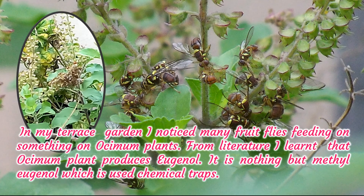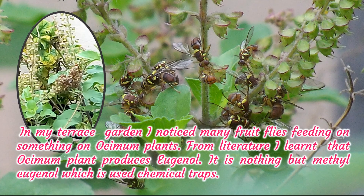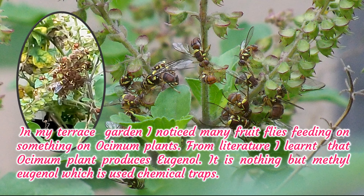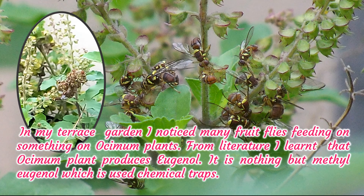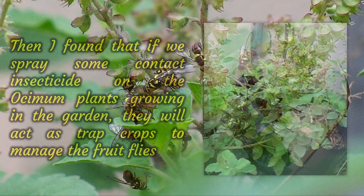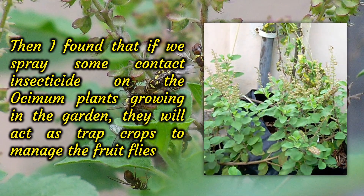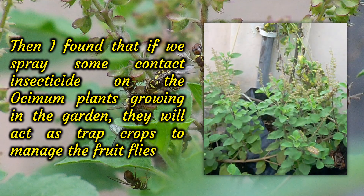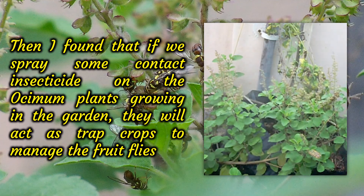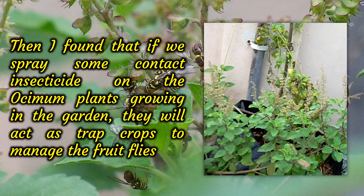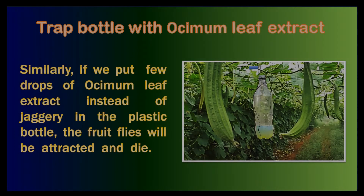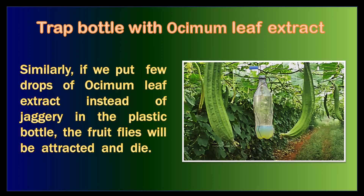In my terrace garden, I noticed many fruit flies feeding on something on Ocimum plants. From literature, I learned that Ocimum plant produces eugenol — it is nothing but methyl eugenol, which is used in chemical traps. I found that if we spray some contact insecticide on Ocimum plants growing in the garden, they will act as trap crops to manage the fruit fly. Similarly, if we put a few drops of Ocimum leaf extract instead of jaggery in the plastic bottle, the fruit flies will be attracted and die.